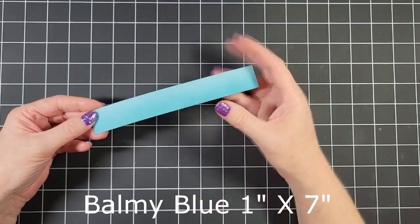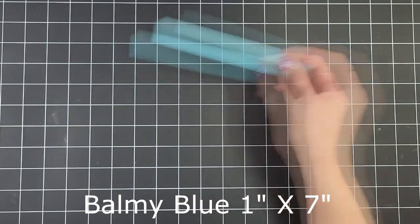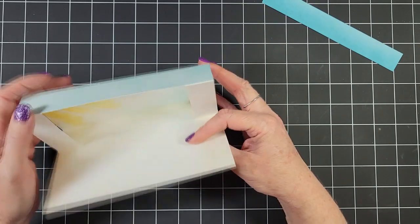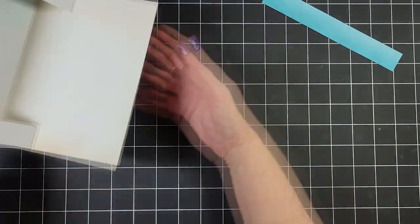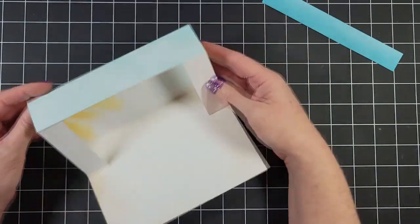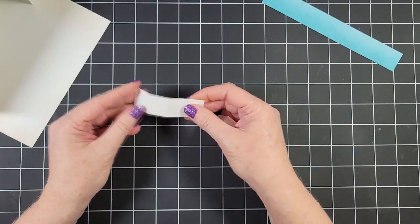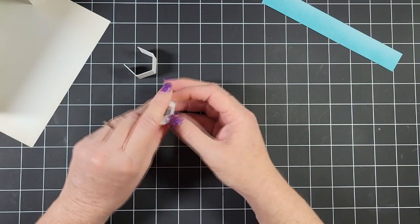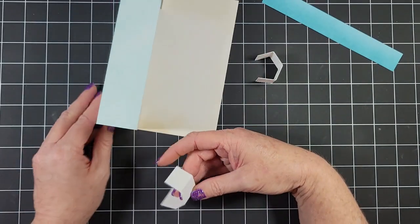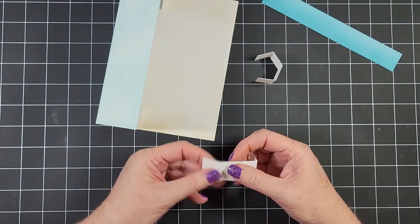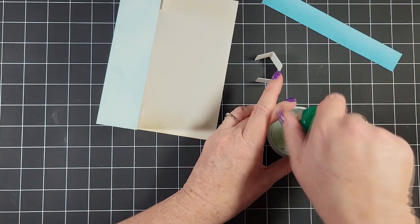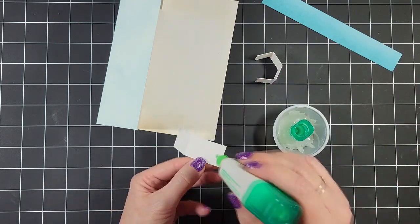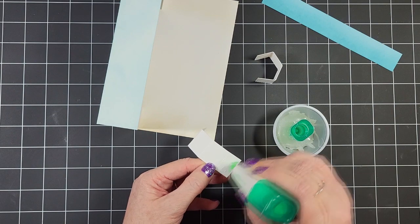Alright. While that was drying, I cut a piece of one inch by seven inch balmy blue cardstock. This is going to be for our lake. But before we put in our lake, we have to add our pop up blocks. So that's what these little guys are here. So they fold and they sort of make like a square. And we're going to attach those to the back. And that's what will create our three dimensional scene when we add our lake in there.